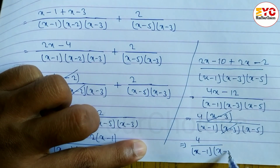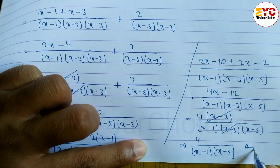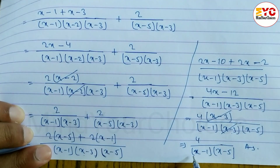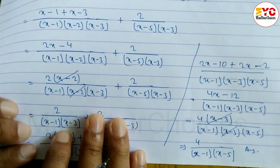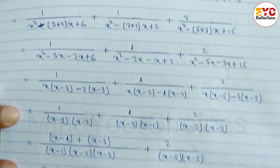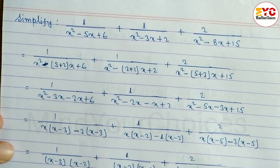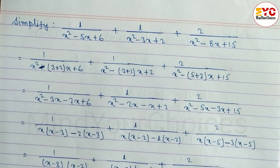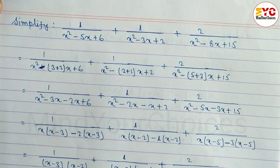So 4 divided by (x − 1)(x − 5) is your answer. Hope you understand this question taken from Class 10 rational expressions. If you understand, please hit the like button, and if you are new on my channel, please consider subscribing. Don't forget to share with your friends. Thanks for watching till the last — keep supporting and keep sharing.